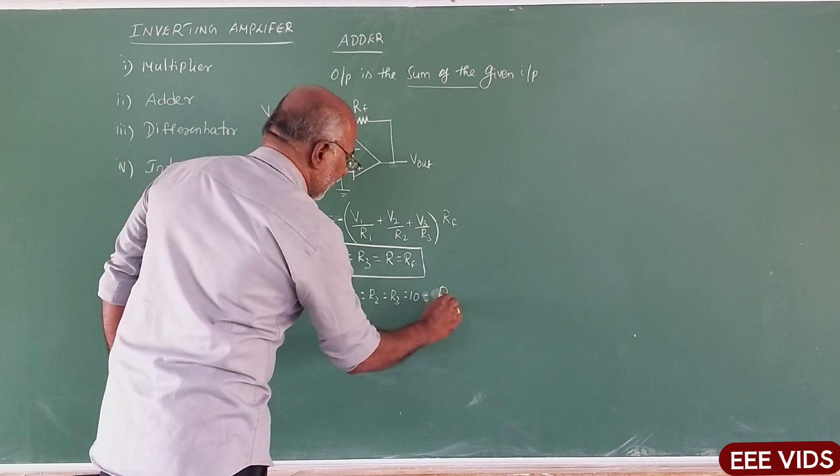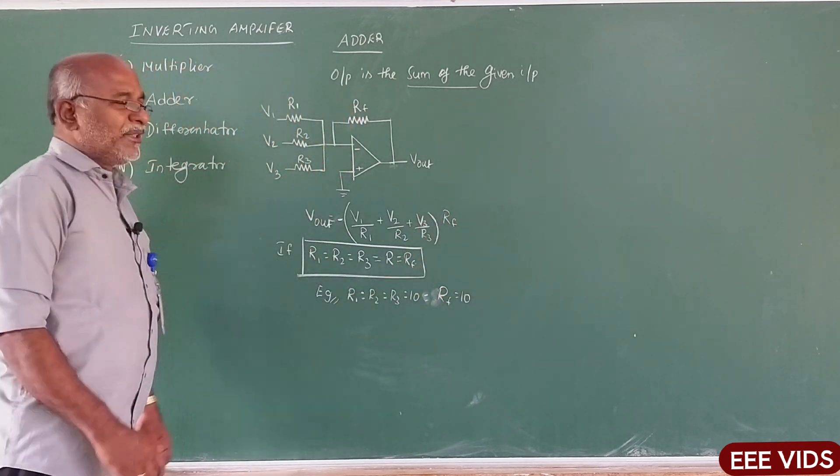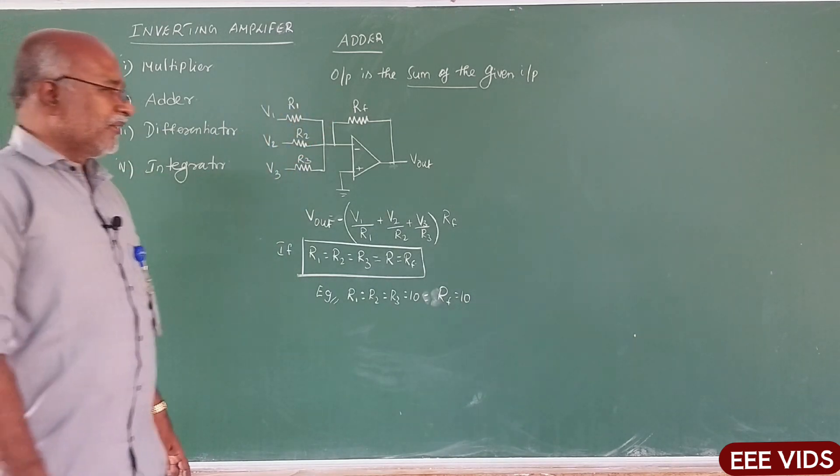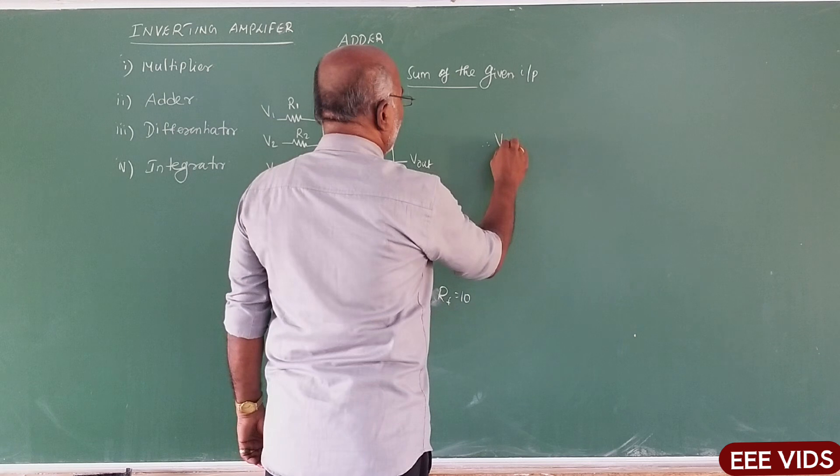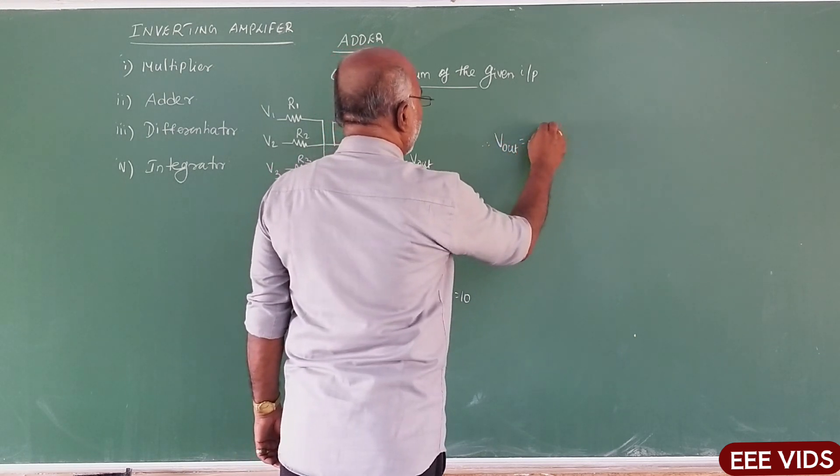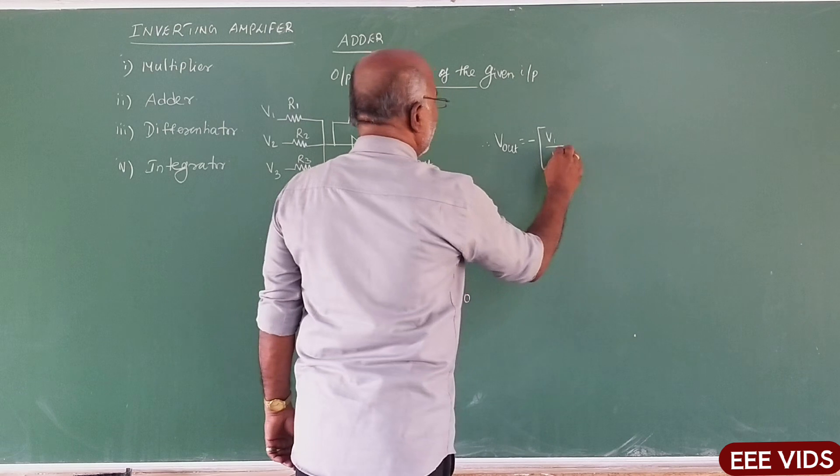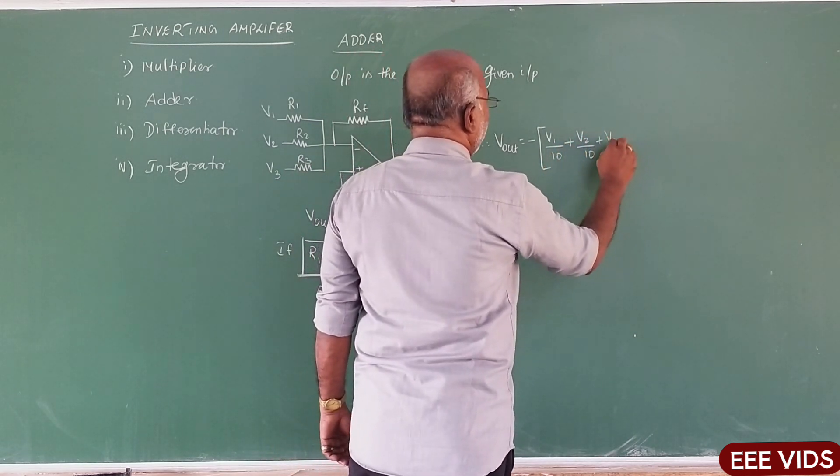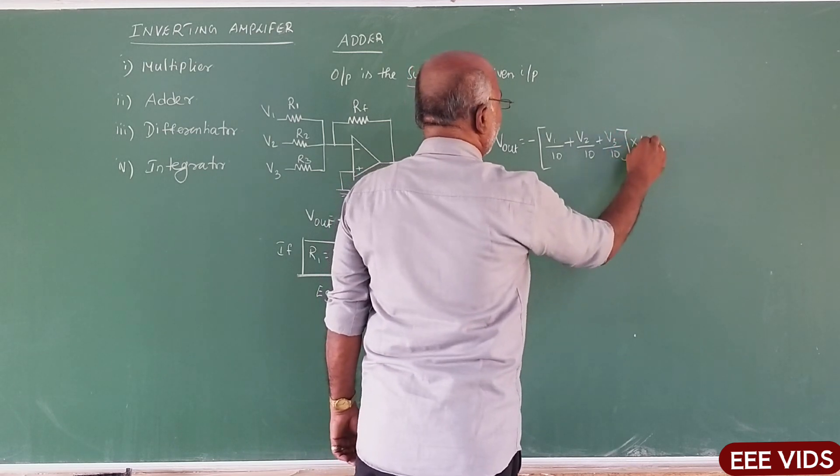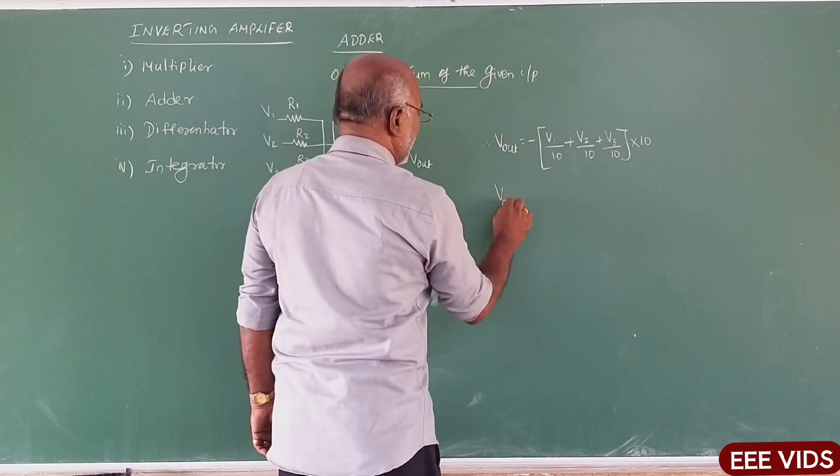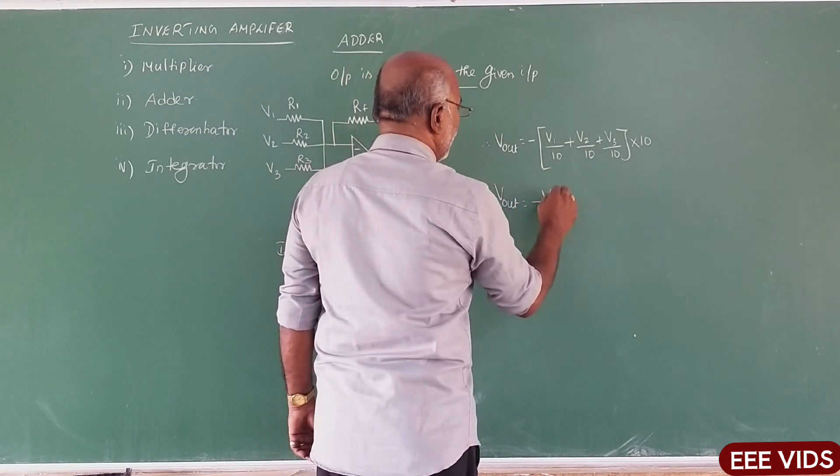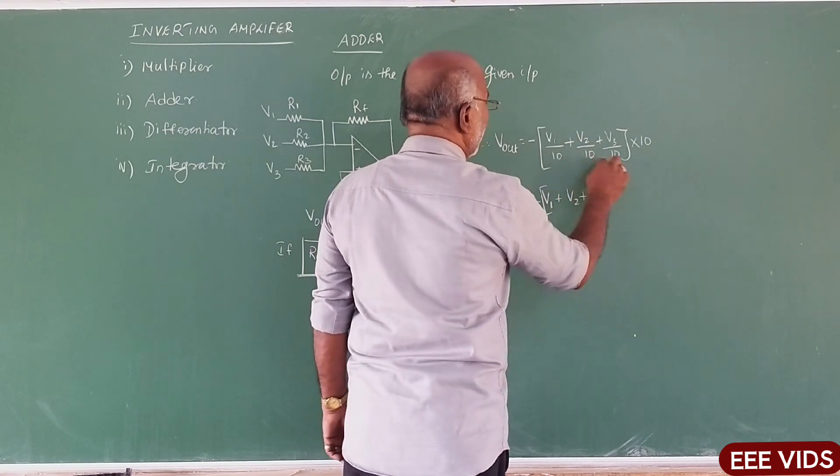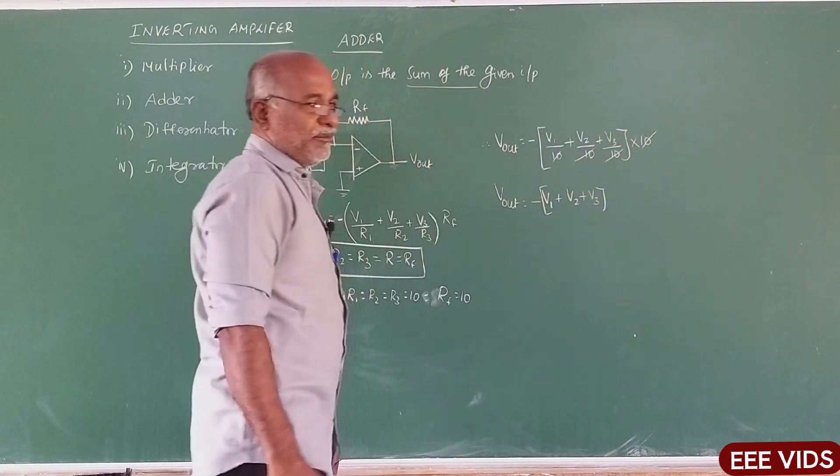So which is equal to Rf, Rf 10 Ohm. In the circuit all resistances are equal, Rf 10 Ohm. So in that condition, now Vout is equal to, if in the formula substitute: minus V1 by 10 plus V2 by 10 plus V3 by 10 into Rf 10 Ohm. So substituting, Vout is equal to minus V1 plus V2 plus V3. Common, cancel out in the technique.